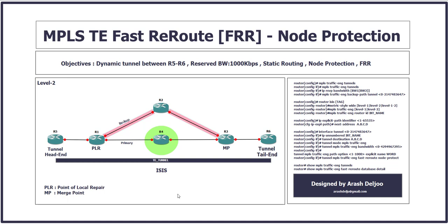Node protection means we are protecting a router, or a node. This scenario is very similar to the previous one, but here we have one new router — Router 4. In the previous scenario, we had only a direct link between Router 1 and Router 3. Now we have Router 4 in that link. We need to protect this router, meaning if it fails, we can reroute traffic fast using a backup tunnel. This backup tunnel is now protecting the node, not just a link. Router 4 is connected to 2 links, so when we protect Router 4, we are also protecting more than one link.